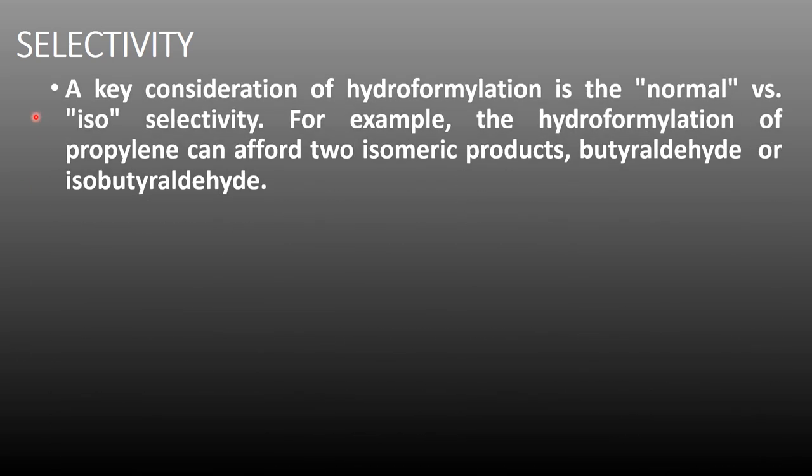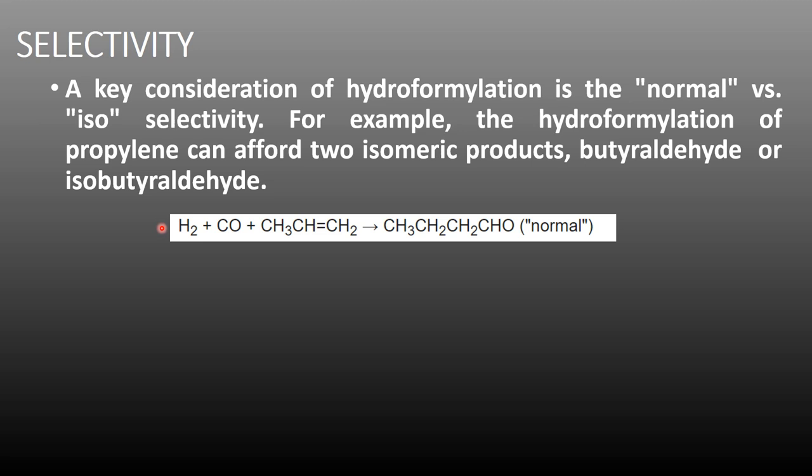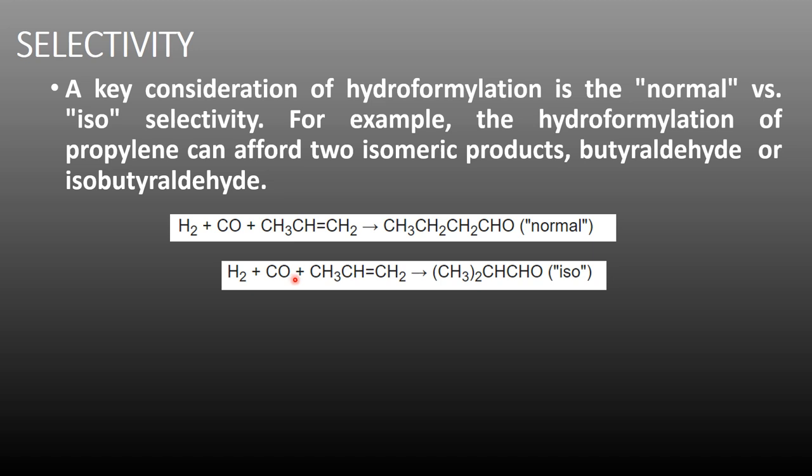A key consideration of hydroformylation is the normal versus iso selectivity. For example, the hydroformylation of propylene can afford two isomeric products: butyraldehyde or isobutyraldehyde. In the first case, hydrogen and carbonyl added to propene give a normal linear product. In the second case, hydrogen and carbonyl ligand added to propene give the iso aldehyde, the isomeric isobutyraldehyde.